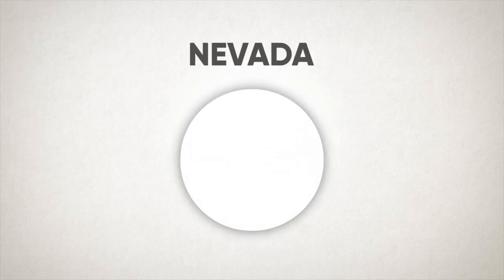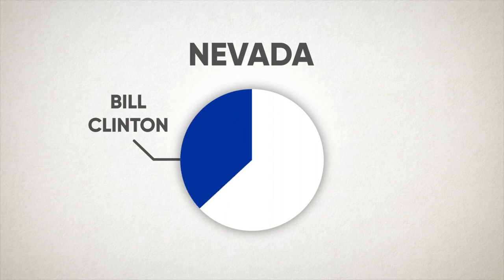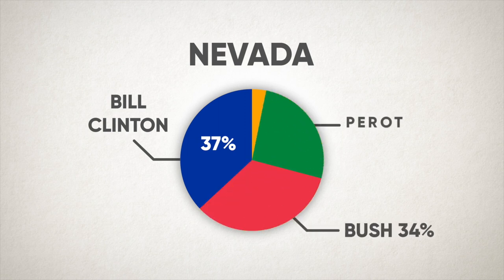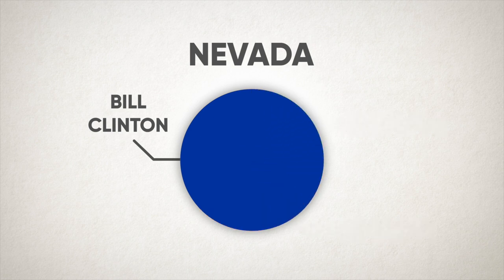Here's an example from the presidential election of 1992. In a three-way race, Bill Clinton eked out a win with 37 percent of the vote in Nevada. That means 63 percent of Nevadans voted for one of the other candidates, but because Bill Clinton received more votes than any of the others, he won all of Nevada's electoral votes.